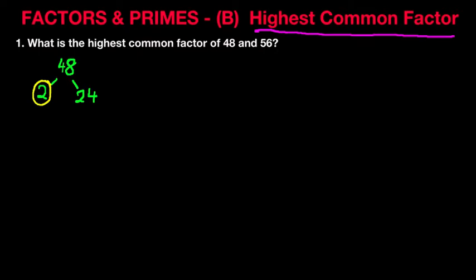We are now left with the number 24. Again, it's an even number, so it is divisible by 2. That gives us 12. 2 times 12 equals 24, and that is our second prime factor of the number 48.